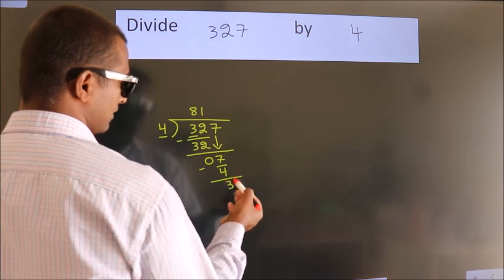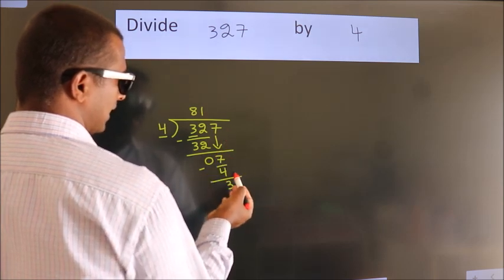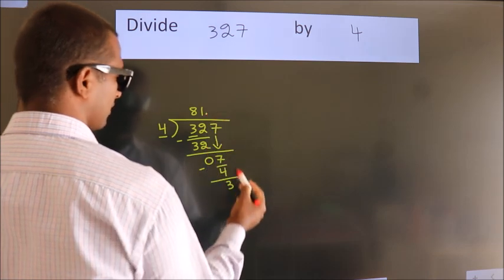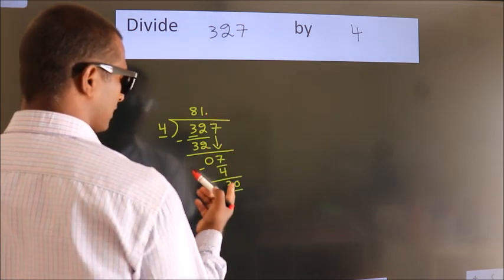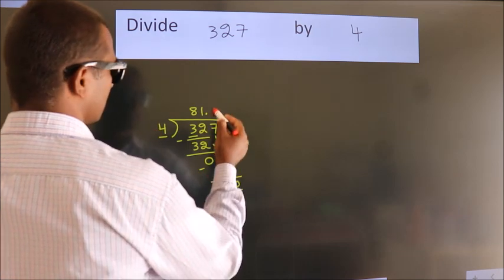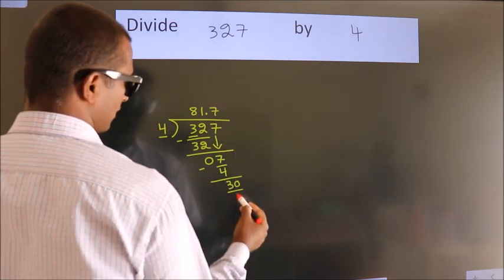After this, no more numbers to bring down. So what we do is put a dot and take 0, giving us 30. A number close to 30 in the 4 table is 4 times 7, which is 28.